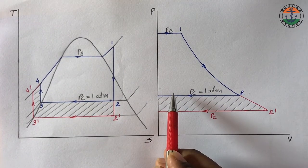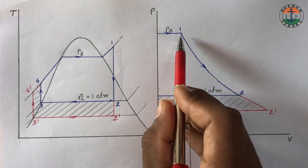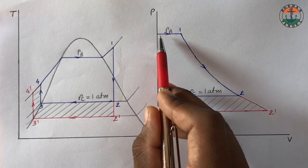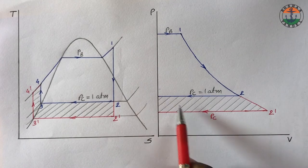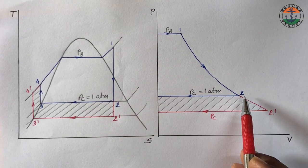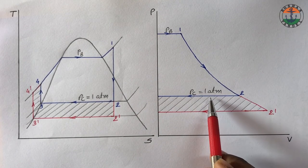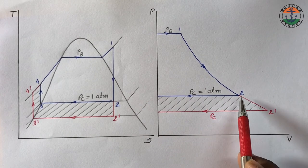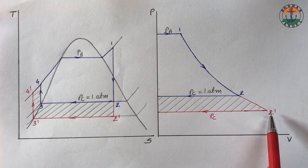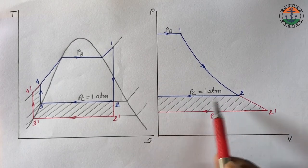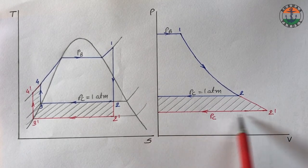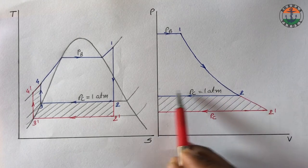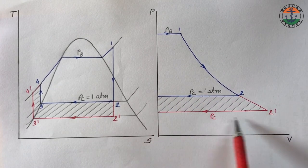On PV diagram you can see the turbine expansion process from boiler pressure to condenser pressure. By decreasing the pressure of the condenser below atmospheric pressure from 2 to 2 dash, it is clearly visible that we are getting additional work as shown in this hatched area.